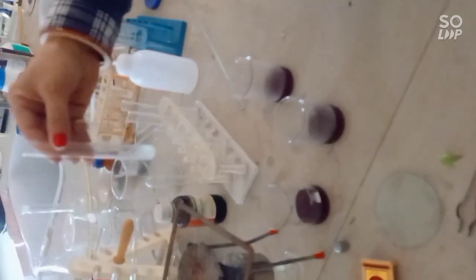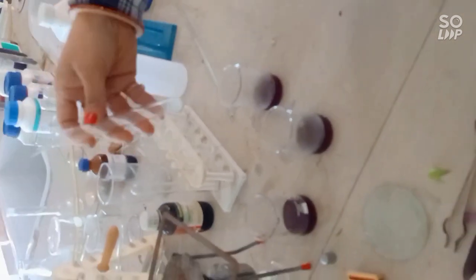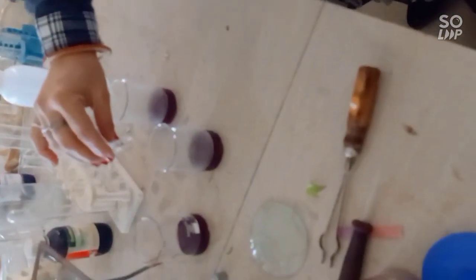Now take a basic solution, that is sodium hydroxide, and pour this solution in one beaker and shake this liquid. As we can see, the color of the liquid becomes green.